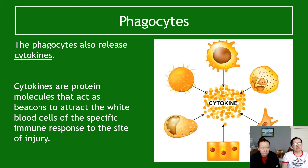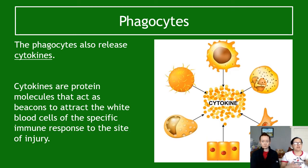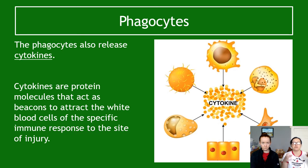Phagocytes also release chemicals called cytokines. Cytokines are protein molecules that act as a chemical beacon, signalling and attracting other white blood cells of the specific immune response to the site of injury. This is important: if you need a more advanced specific immune response, cytokines draw those cells to the exact site of injury so they can do their job.